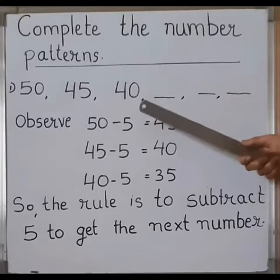See here, the first number is 50. We subtracted 5 from 50, so we got the answer 45. Again we subtract 5 from 45, we got the next number, that is 40.